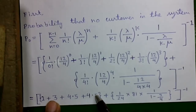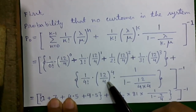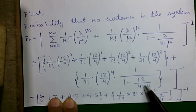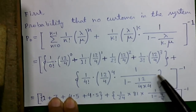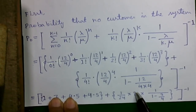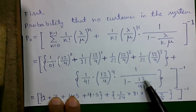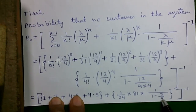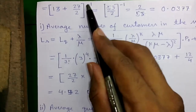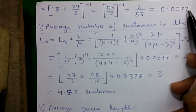For the second part: 1/4! × (12/4)^4 × 1/(1 − 12/(4×4)) = 1/24 × 3^4 × 1/(1 − 12/16) = (1/24) × 81 × 1/(1 − 3/4) = (81/24) × 4 = 13.5. Adding both parts: (13 + 13.5)^−1 = (53/2)^−1 = 2/53 ≈ 0.0377. So P0 = 0.0377.